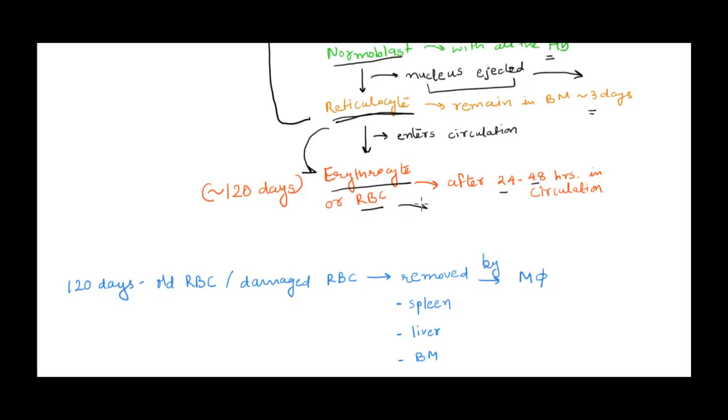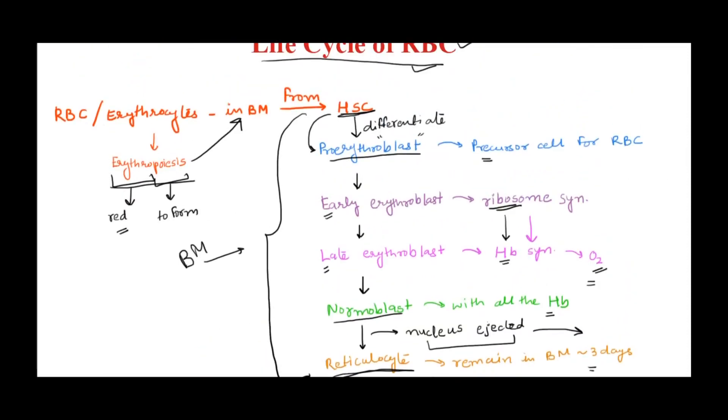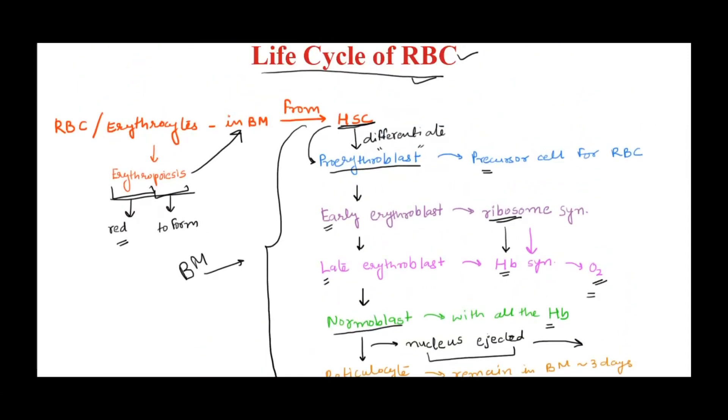This mature RBC carries out oxygen transport in the body. This erythrocyte or mature RBC has a lifespan of about 120 days. Since it doesn't have a nucleus, it won't multiply or grow - it just carries out its function. Once it's old, after 120 days, it needs to be removed from the body and new cells formed through erythropoiesis.